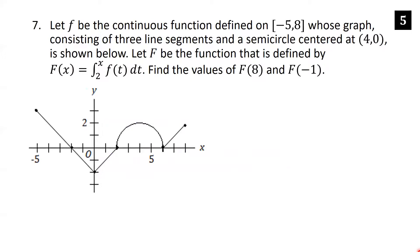Let f be the continuous function defined on the closed interval [-5, 8] whose graph consists of three line segments and a semicircle centered at (4, 0). Let capital F(x) equal the integral from 2 to x of f(t) dt. Find the values of F(8) and F(-1).